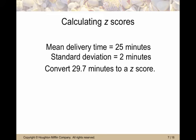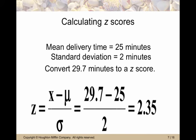The mean delivery time is still 25 minutes. The standard deviation is 2 minutes. Convert 29.7 minutes to a z-score. So we do the 29.7 minus 25 over 2 and we get 2.35. So this is a long delivery. It took 2.35 standard deviations above the mean.